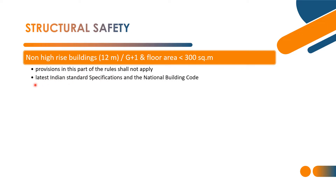We will talk about the latest IS specifications and NBC codal provisions. Structural safety for non-high-rise buildings up to 12 meter G plus 1 building and having floor area less than 300 square meters — these safety provisions apply.